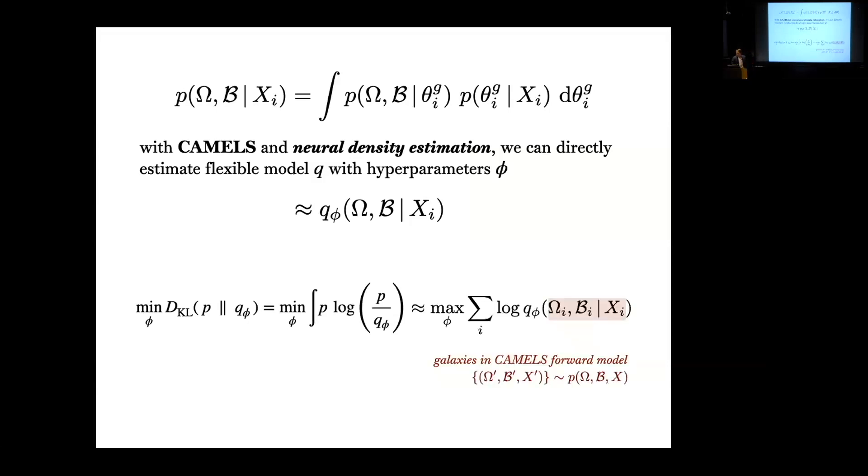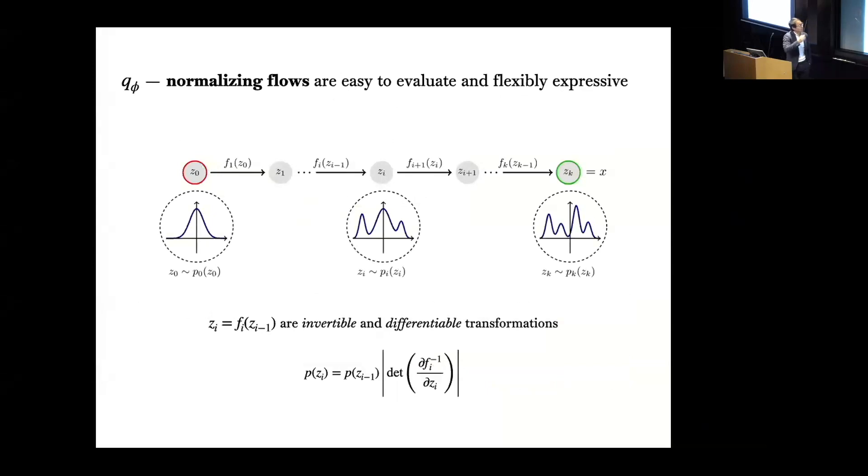One way we can do this is by trying to minimize the KL divergence between the true posterior and our estimate. This has the nice advantage that it's very easy to evaluate because you can rewrite this as the sum of the log likelihood of q where this value is just evaluated using the galaxies in your CAMELS forward model. So the only thing you need is a model that's easy to evaluate and that's flexible.